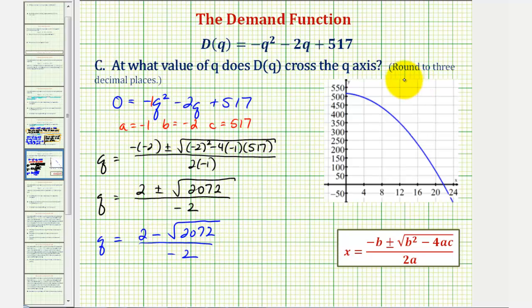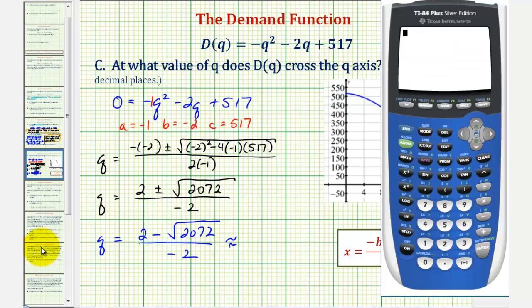Now we're asked to round to three decimal places, so we're not going to simplify the square root. We go to the calculator now, and get our decimal approximation. So our numerator in parentheses is two minus the square root of 2072, closed parenthesis for the square root, another closed parenthesis for the numerator, divided by negative two.